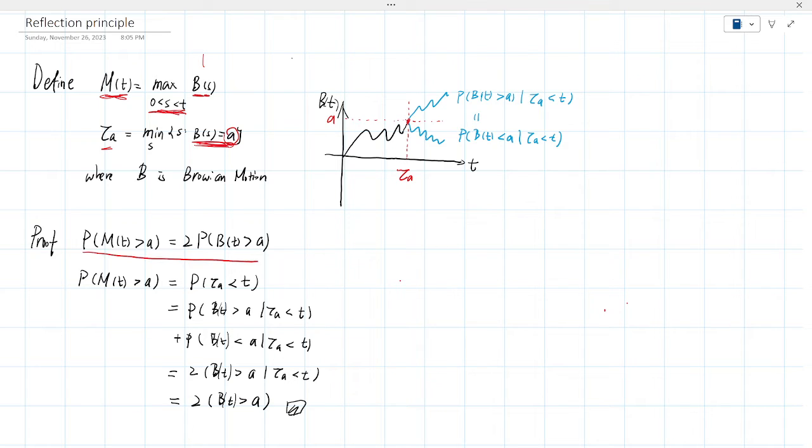This is the result of the reflection principle, the theorem. The probability that the maximum of Brownian motion is greater than A is twice the probability that Brownian motion at time t is greater than A.